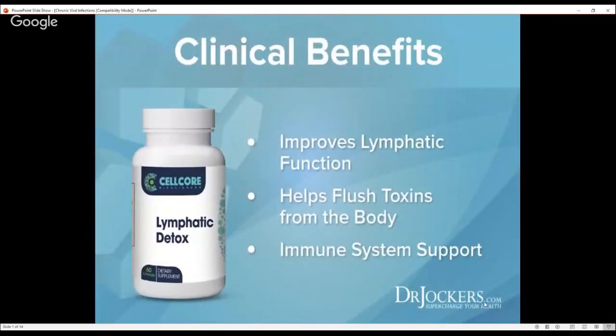Now let's talk about some great supplements. Lymphatic detox is a fantastic supplement for reducing viral activity — it contains herbs like sheep sorrel, turkey rhubarb, burdock root, astragalus, and graviola. Burdock, sheep sorrel, and rhubarb are herbs that Rene Caisse used in Essiac tea, which was renowned for its ability to help prevent and reduce cancer growth — powerful because viruses are one of the leading causes of cancer.